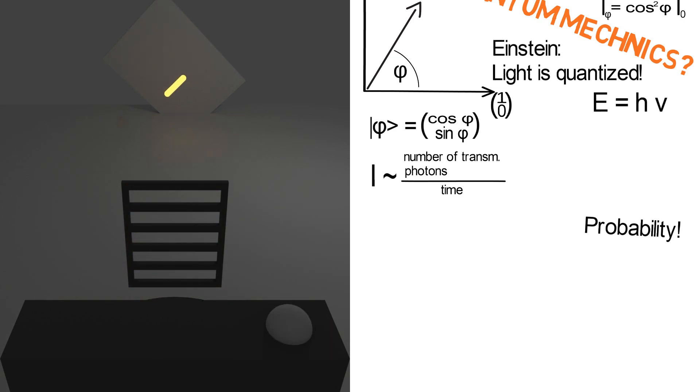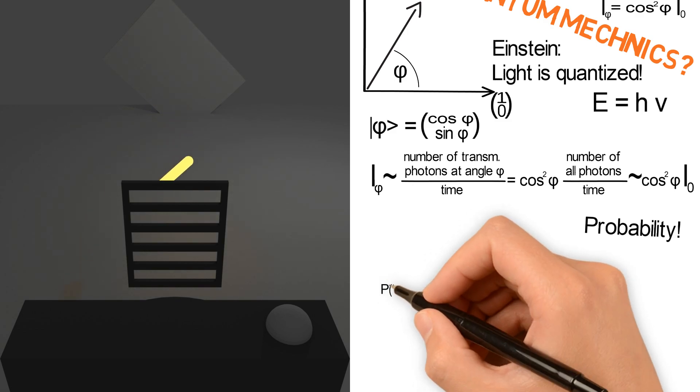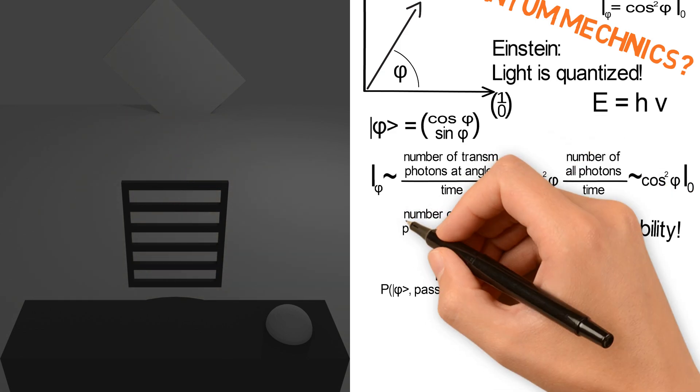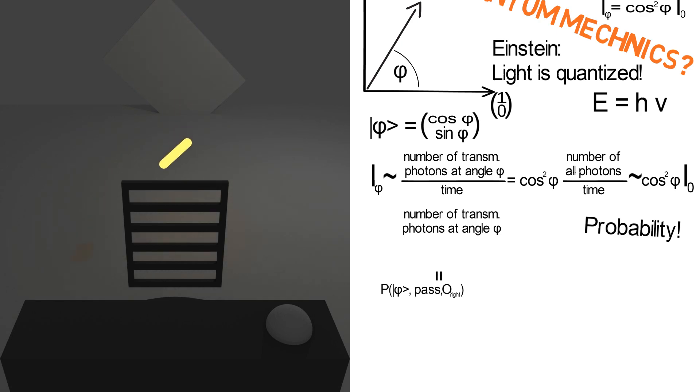In order to calculate these probabilities, we use that the intensity at the detector for a beam at angle phi is the number of transmitted photons at angle phi per time. Then the intensity at angle zero is the number of all photons per time, because all photons with right-oriented polarization pass the filter. And now experiments tell us that the two are related by cosine phi squared. But the probability of a photon at angle phi to pass the right-oriented filter O-right is of course the number of photons at angle phi passing the filter, divided by the total number of photons, which is cosine squared phi.